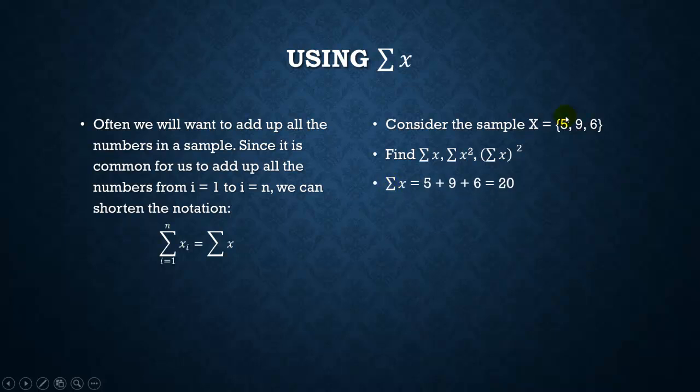So for our first one, the summation of x, we just want to add up the numbers 5, 9, and 6, and that will give us 20. For our next one, we just want to square each of the numbers and then add it up. So we'd get 25 plus 81 plus 36, for a total of 142. For our last one, we just want to add up all the numbers, which we already know is 20, and then square it, so that should give us 400.